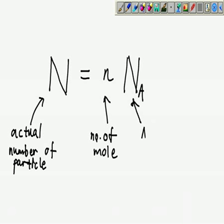And this is Avogadro's constant and it has a value of 6.02 times 10 power 23.